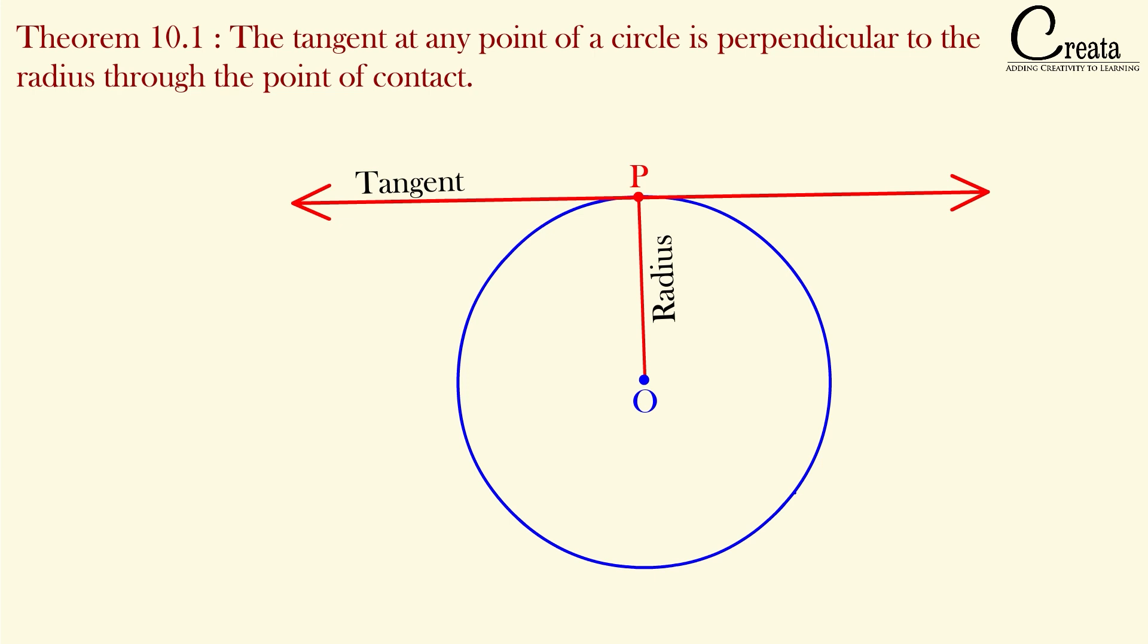The concept is that the radius and tangent will be perpendicular to each other. That is, the angle between the radius and the tangent will always be 90 degrees. This is the theorem, and we will prove this.